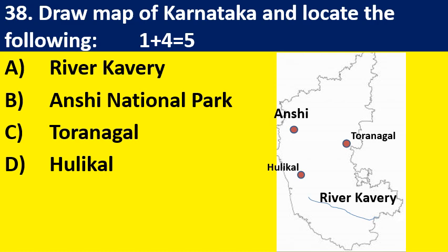For the last question, draw the map of Karnataka and locate the following: River Cauvery is located in the southern part of Karnataka; Anshi National Park is in Uttara Kannada; Toranagal is in Ballari, where you have Jindal private iron and steel industries; and Agumbe, the highest receiver of rainfall in the Western Ghats, is in Shimoga district, Tirthahalli taluk. Practice on the basis of this and prepare well for the exam. All the best.